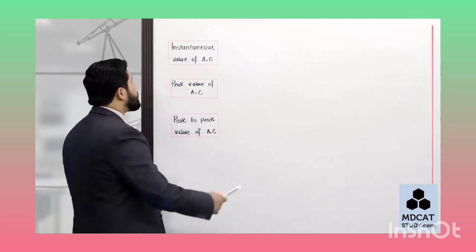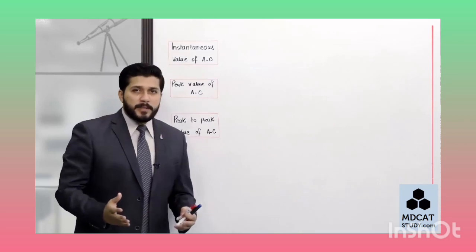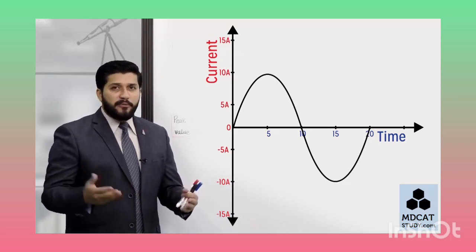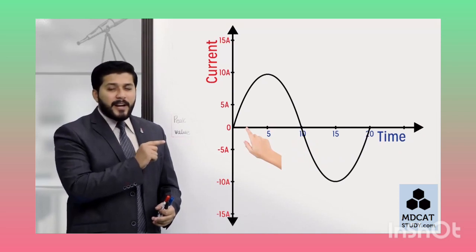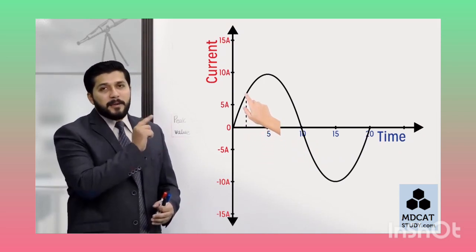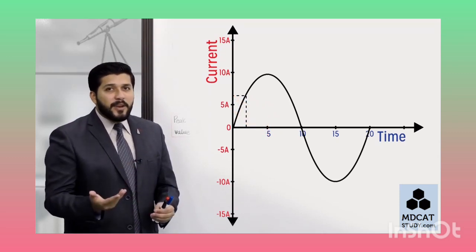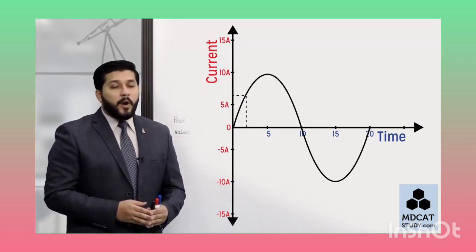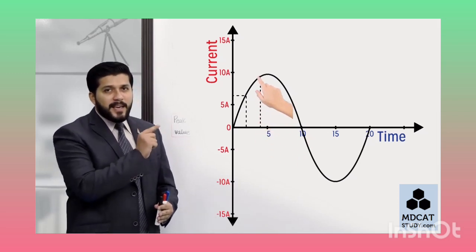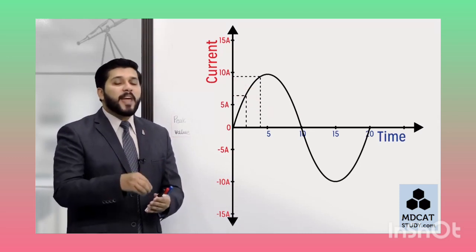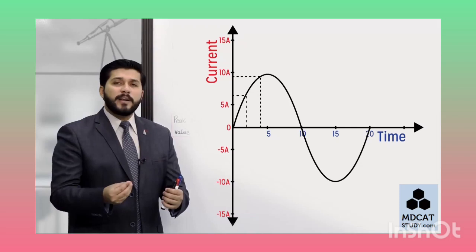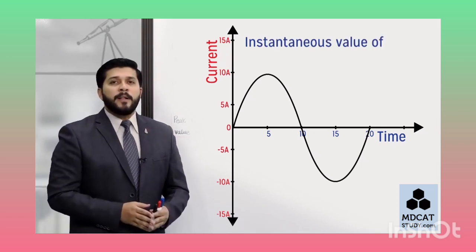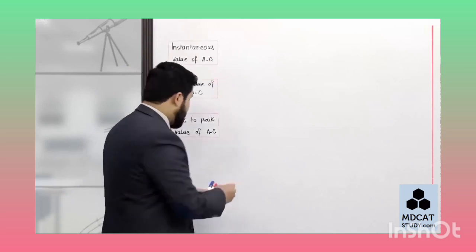سب سے پہلی value ہے instantaneous value of AC۔ آپ کے پاس یہ پورا alternating current کا graph ہے - different points پر current کی different value ہے۔ اگر میں آپ سے پوچھوں کہ اس time پر current کی value کتنی تھی، تو آپ دیکھیں گے کہ اس لمحے یہ تھی - یہ instantaneous value of current ہے۔ تو instantaneous value of current کیا ہوتا ہے؟ آپ کے cycle کے اندر کسی بھی لمحے current کی جو value ہوگی، اسے instantaneous value of current کہتے ہیں۔